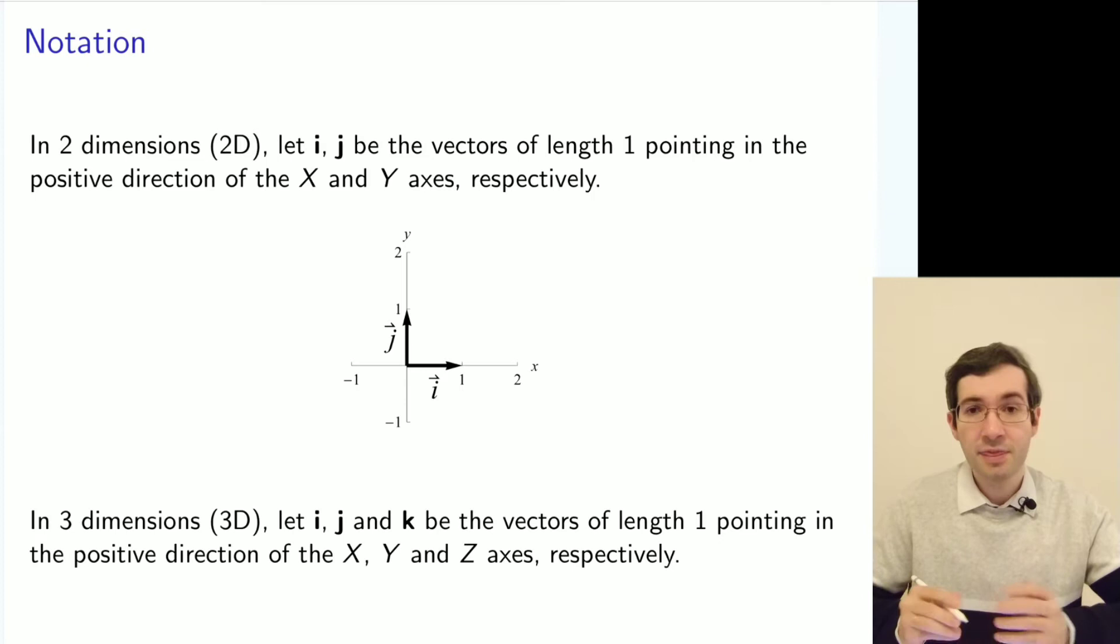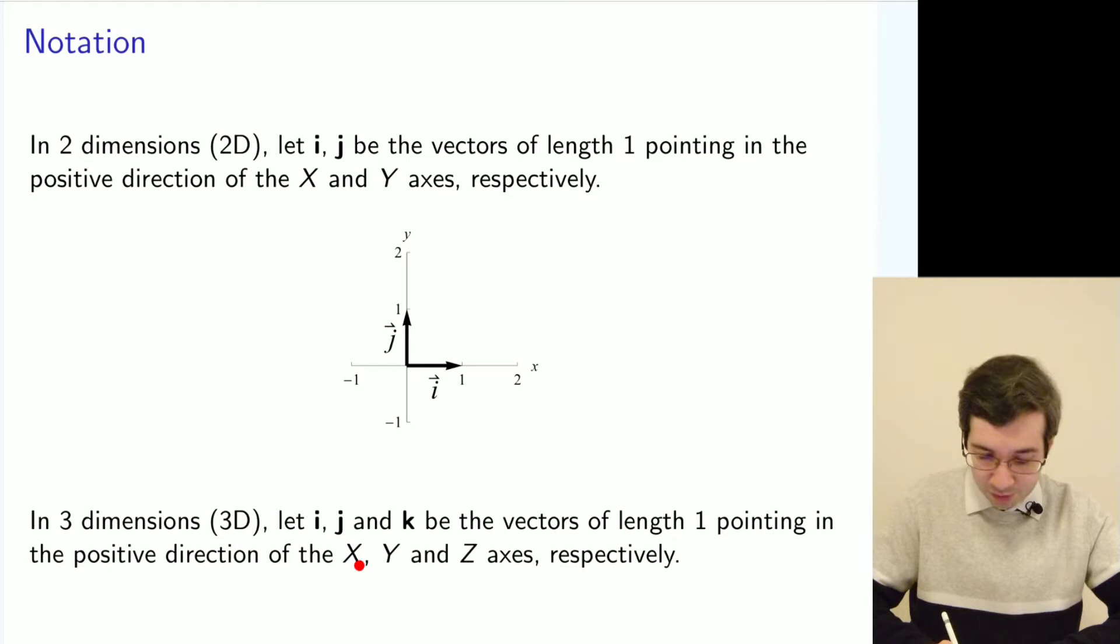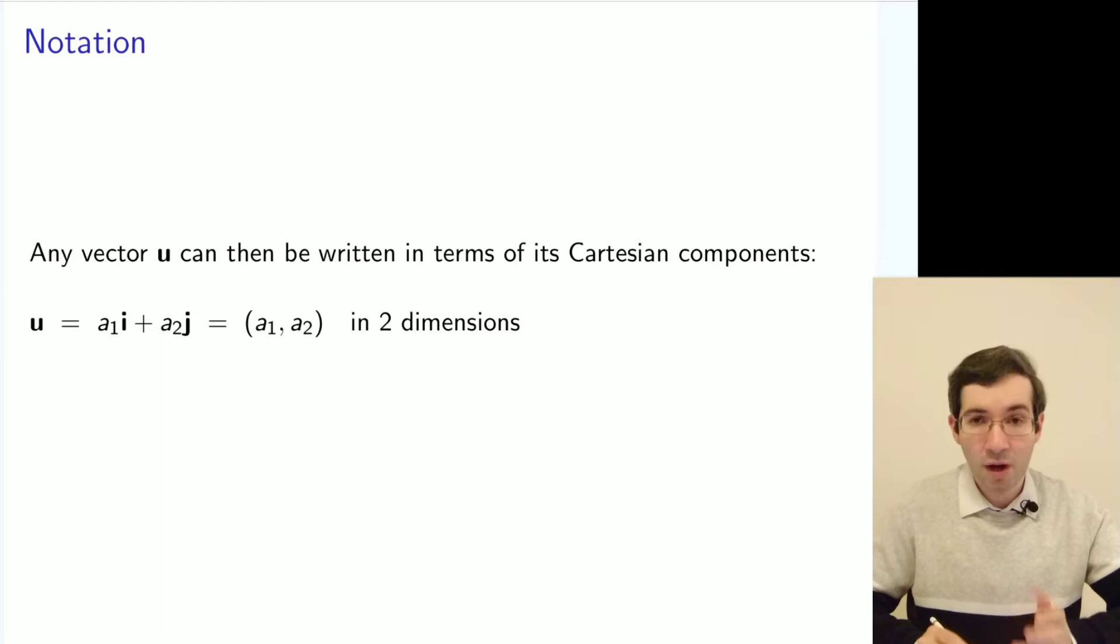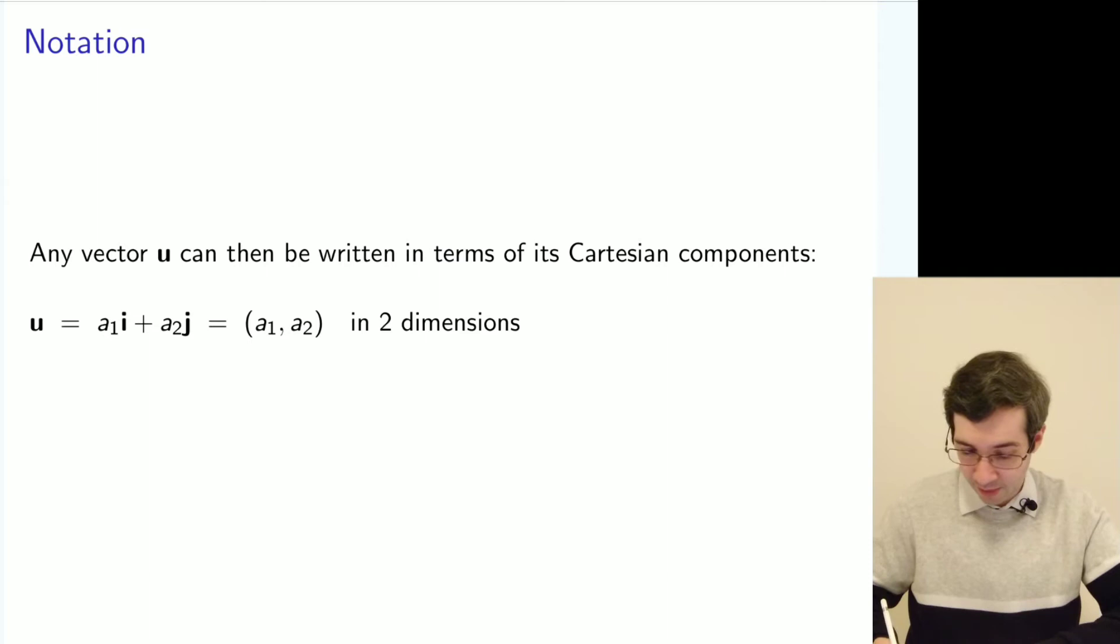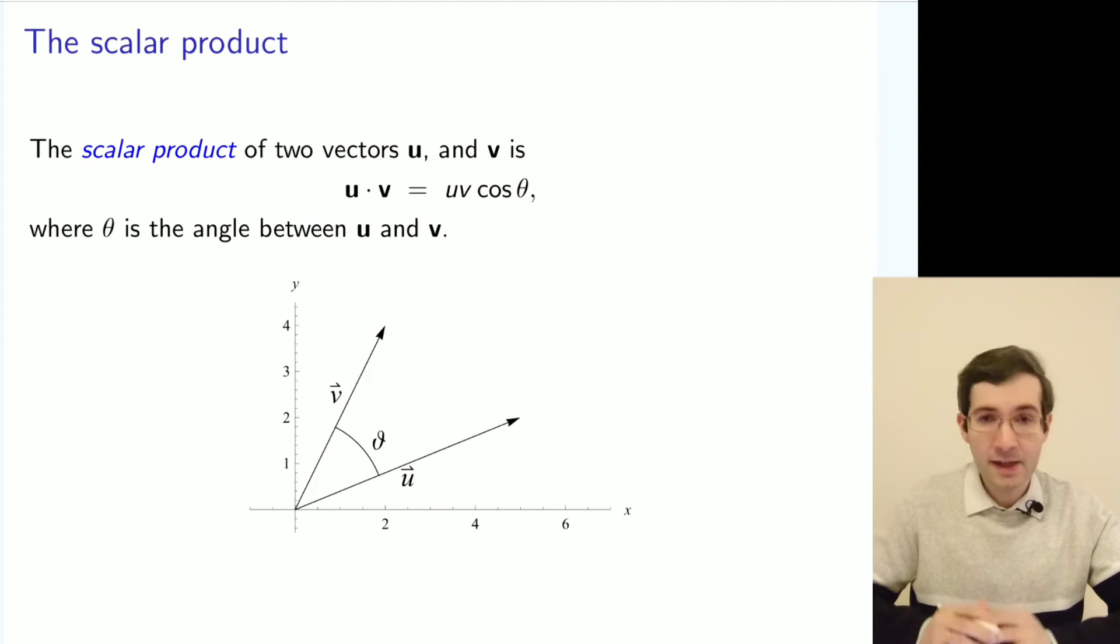Likewise, in three dimensions you have three unit vectors which point in the direction of x, y, and z respectively. This is useful because we can represent a vector as a set of its components. You can write as a sum or as just a set of coordinates. In 2D it will be two coordinates, in 3D it will be three coordinates.